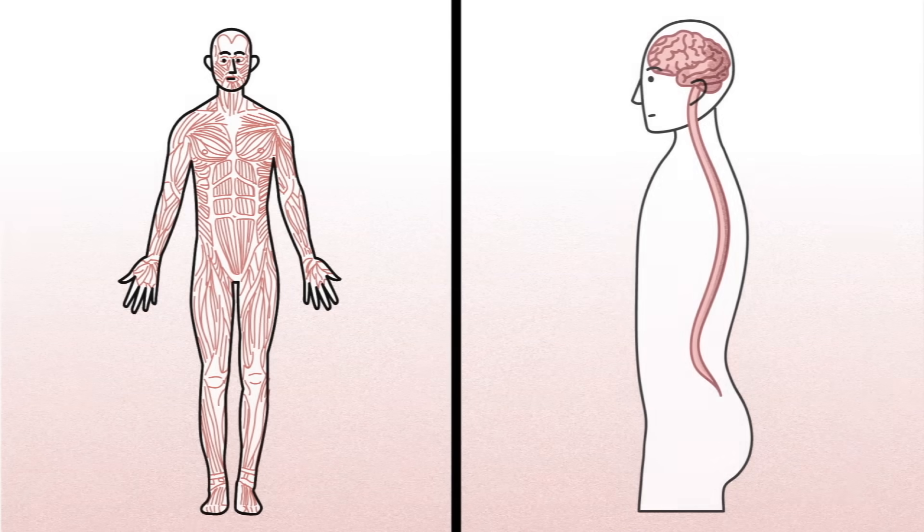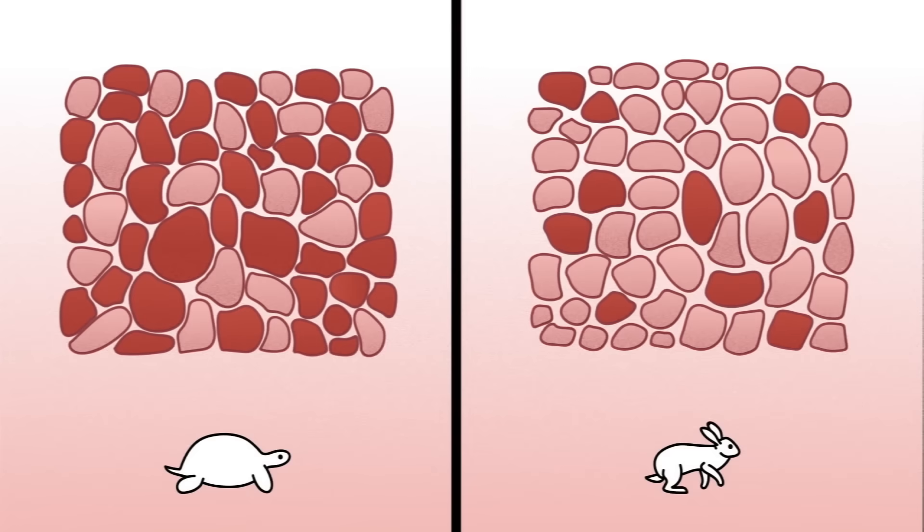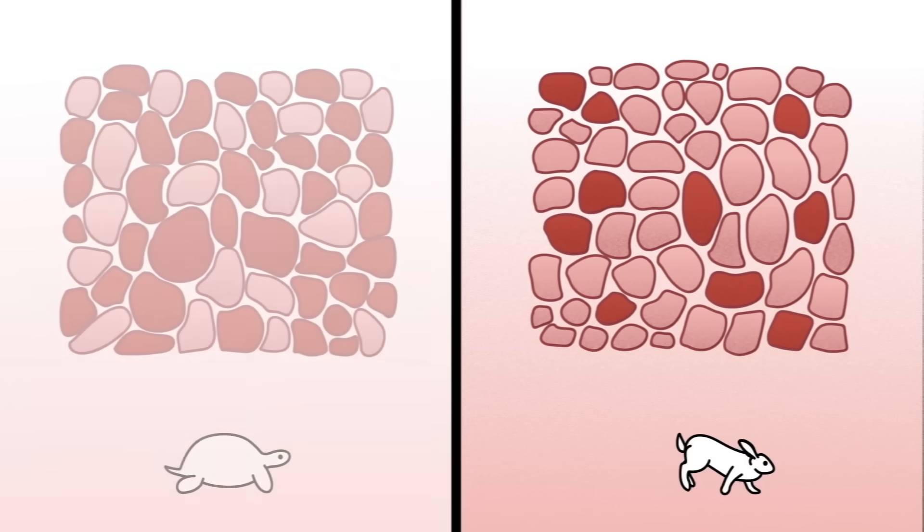This muscle group also contains two types of muscle fibers to refine our motions even further: slow-twitch and fast-twitch. Fast-twitch fibers react instantly when triggered, but quickly use up their energy and tire out.